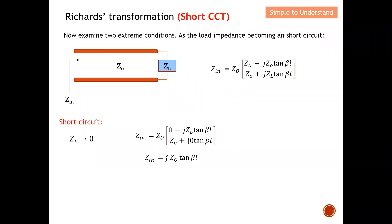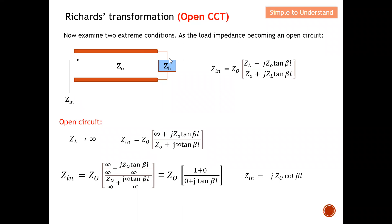Let's focus on the short-circuit case first. When the termination is a short circuit, ZL equals zero. Substituting ZL = 0 into the input impedance equation, the terms involving ZL are removed, Z0 cancels, and we are left with Zin equals j·Z0·tan(β·length). This is the input impedance of a short-circuit terminated transmission line.